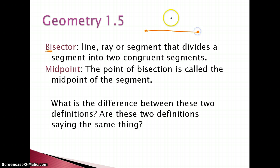So let's say we had segment AB and let's just make it a ray, and this ray divides that segment into two congruent pieces. And then we have a midpoint, 'mid' being middle, and so this would be our midpoint and that's the point of bisection. That point of bisection we just call the midpoint of the segment.